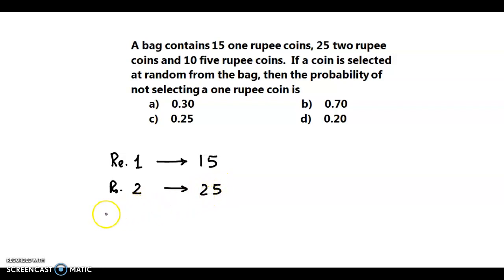And 10 five rupee coins. So five rupee coins are 10. So in all, if we add 15 and 25 that's 40, 40 plus 10. So totally we have 50 coins.